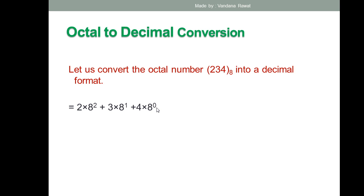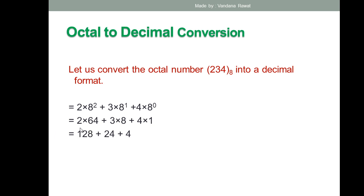So the expression is: 4 × 8⁰ + 3 × 8¹ + 2 × 8². Now, 8⁰ = 1, 8¹ = 8, 8² = 64. Calculating: 2 × 64 = 128, 3 × 8 = 24, 4 × 1 = 4. Adding these: 128 + 24 + 4 = 156. So 156 is the decimal equivalent of octal 234.